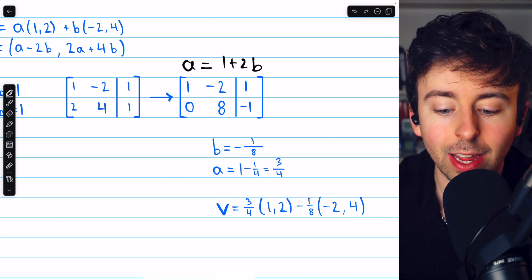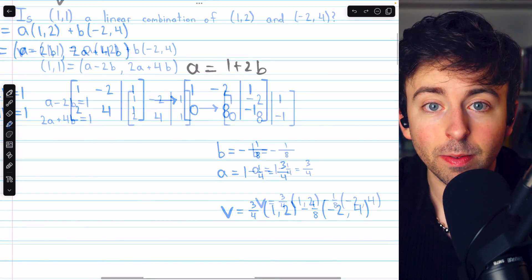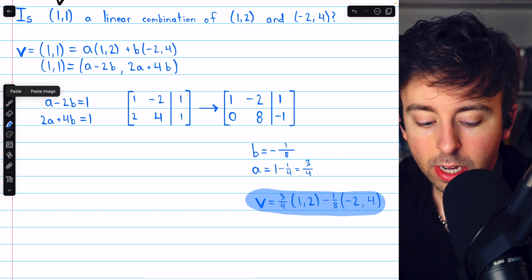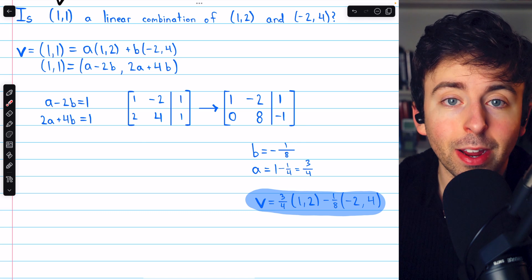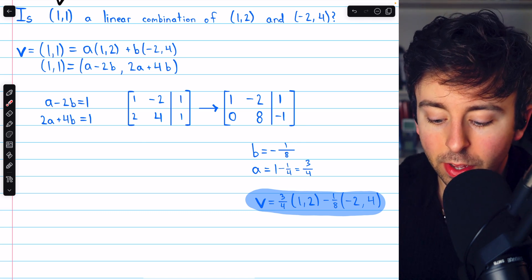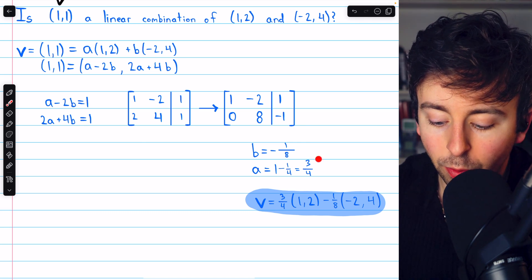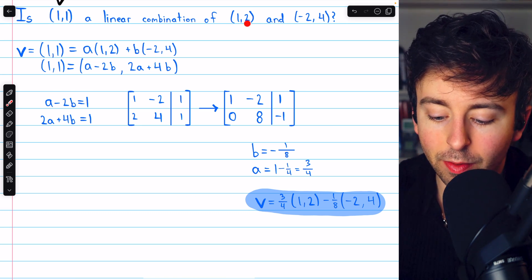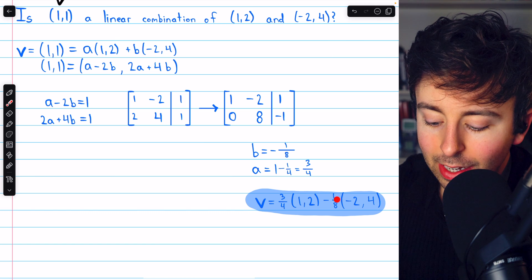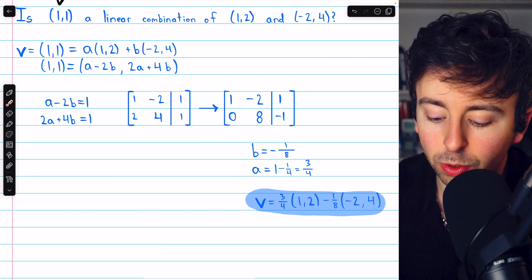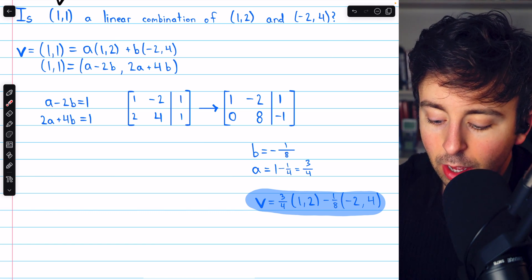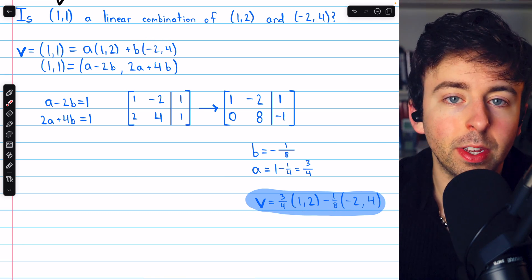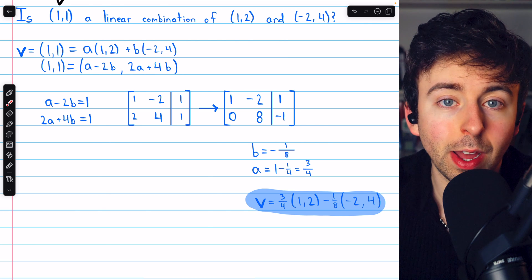So we have values for a and b satisfying the system. So we see that v is a linear combination of the other vectors, and we know exactly how to express it as such. v must equal 3/4, that was the value for a, times the first vector, and then minus 1/8, because b is equal to -1/8, minus 1/8 times the second vector. And thus, we've expressed v as a linear combination of the other two vectors.